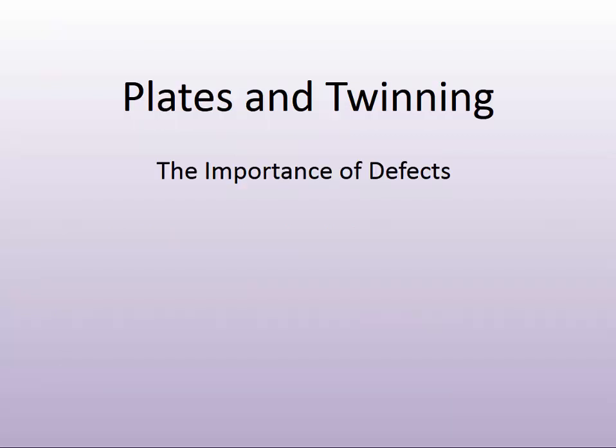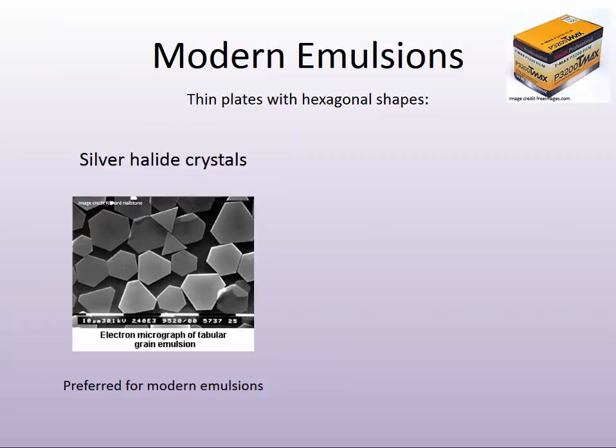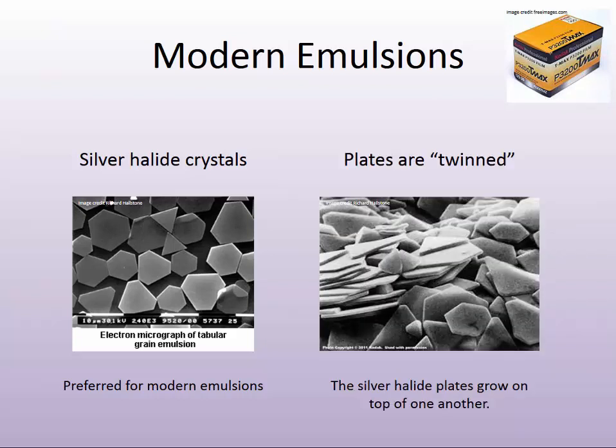There can be very unique effects when we take advantage of this known fact that one face grows faster than another in a cubic relationship. We can get the various types of silver halides that we have sometimes seen in the more modern 20th century silver halide emulsions — the plates, and plates that seem to be growing on top of plates. When there are a series of plates growing one on top of the other, this is known as twinning.